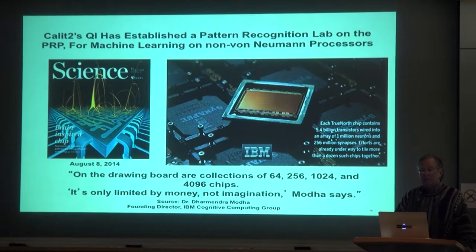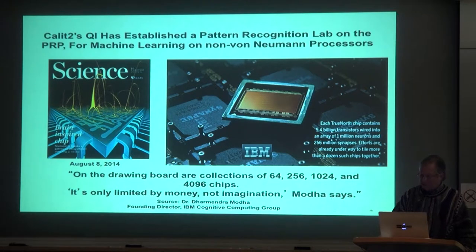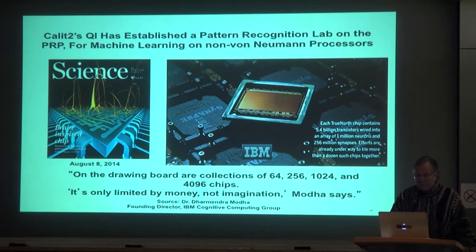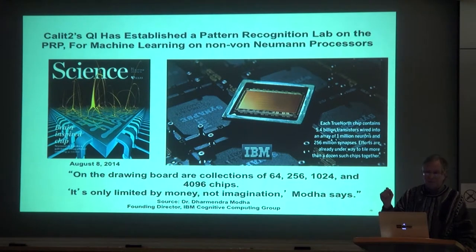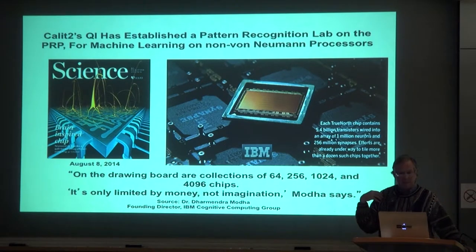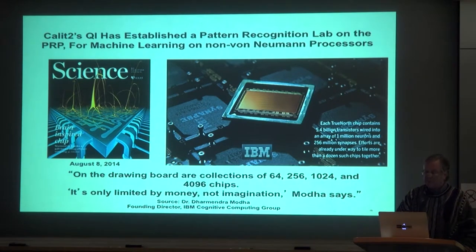We've also just started working with this Pattern Recognition Lab. Here's a chip — it fits in something the size of my phone but maybe twice as thick. It has 256 million synapses and a million neurons. This is IBM's TrueNorth chip. Javier Gerardo has come back to us from Qualcomm after completing his PhD dissertation with me in this area years ago, and we've hired him back to work on this project.